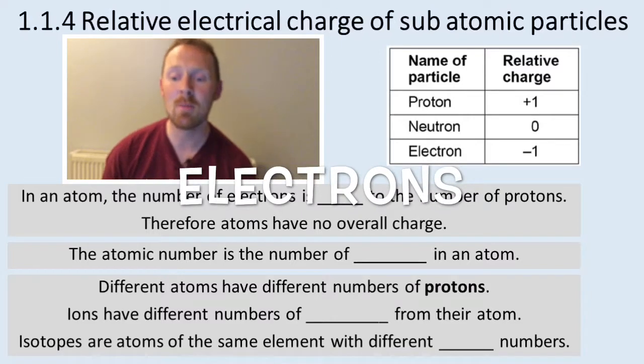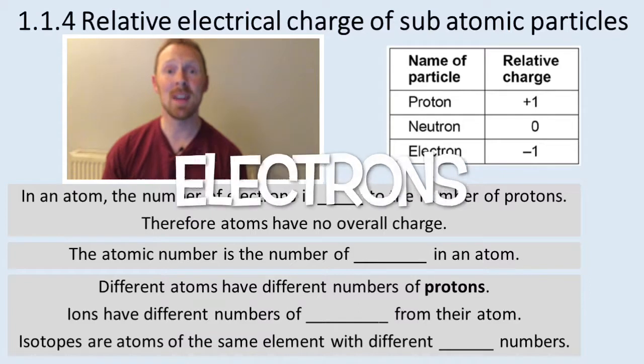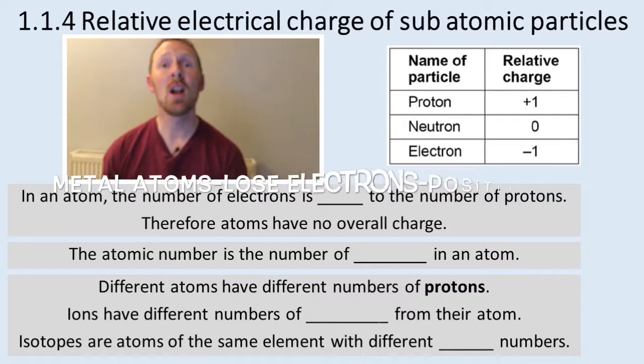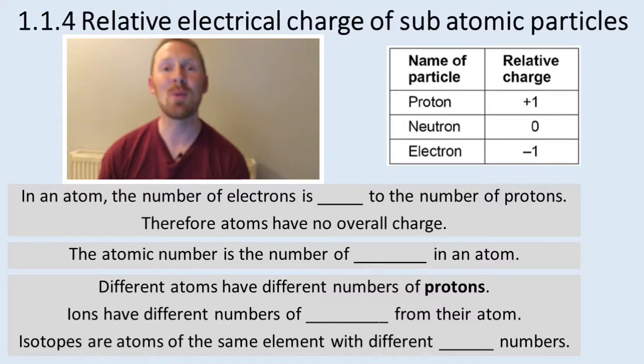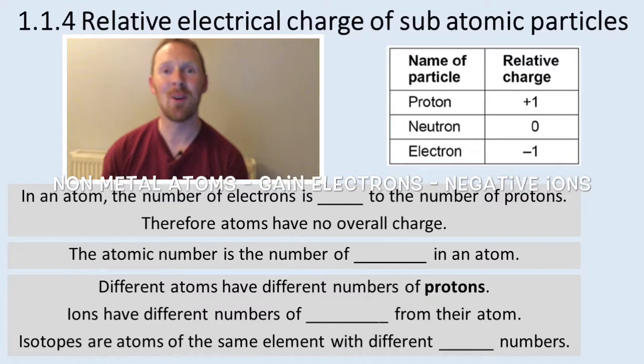Ions have different numbers of electrons from their atoms. The rule is this: Metal atoms lose electrons to form positive ions, and non-metal ions form negative charges because they gain electrons.